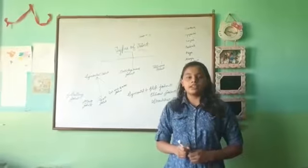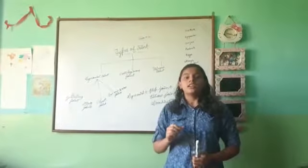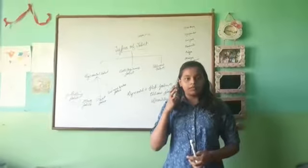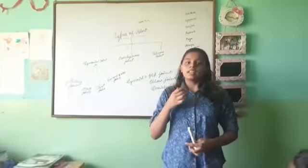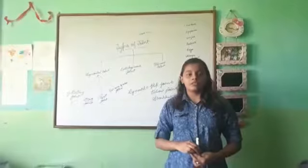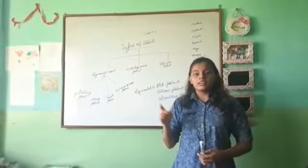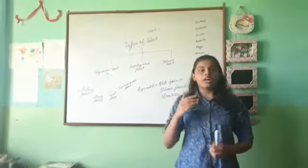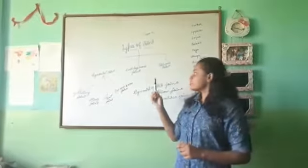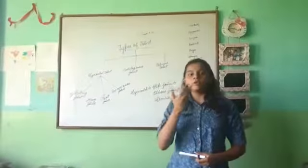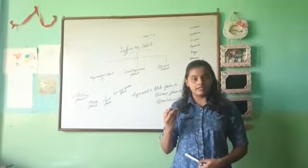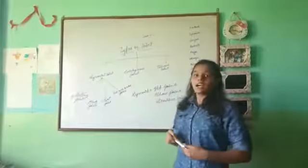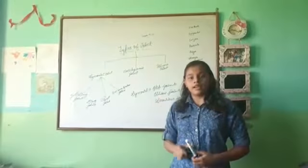Cartilaginous joint is present in the cartilage between the vertebrae. By that, we can move our head up, down, and side to side. So it cannot be moved totally 360 degrees. It is called cartilaginous joint, which means it moves partly.